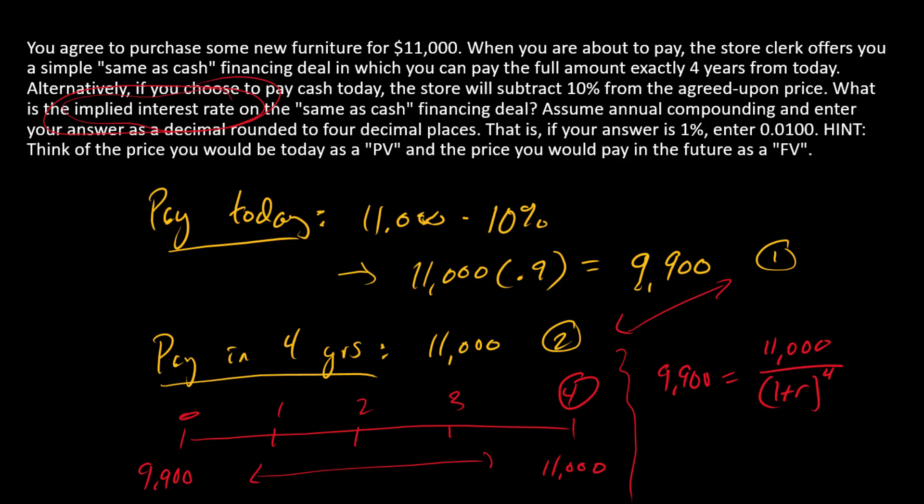If we just solve this equation for R, we have our implied interest rate. That R is 0.02669 or 2.669%. So there is the answer.